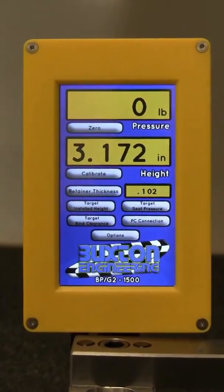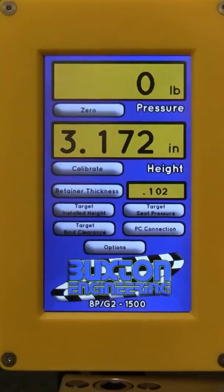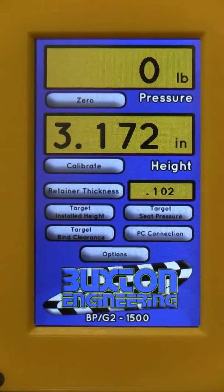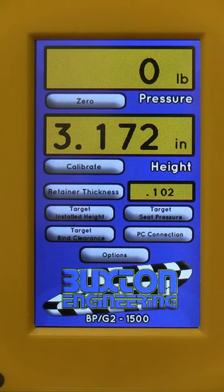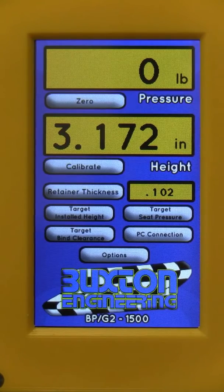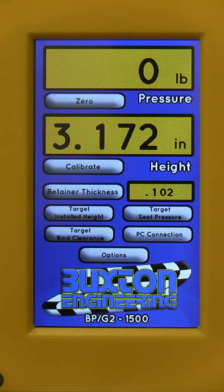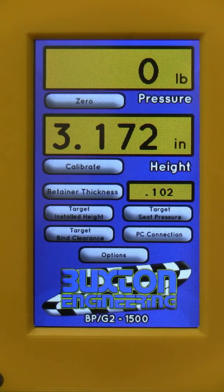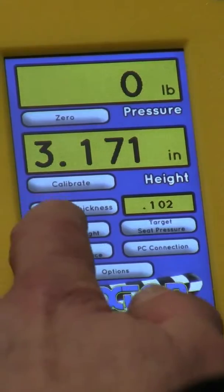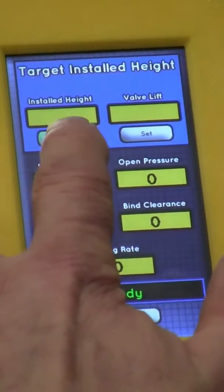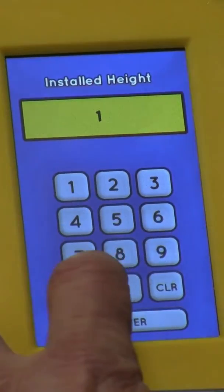We have recently added an optional software upgrade. It adds features not available on any other standalone tester on the market and can really save a lot of time. It adds four new buttons to the main screen: target installed height, target seat pressure, target bind clearance, and a future but not yet available PC mode that will allow you to connect your tester to a PC for even more added features.